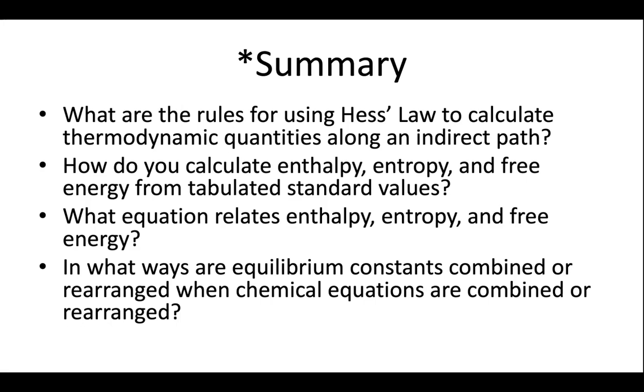When we have these three things, they're related by the equation delta G equals delta H minus T delta S. And when we do these same kinds of transformations with equilibrium constants, the rules are a little bit different. So if I reverse the reaction, I'm going to take the inverse of the K. If I multiply by a number, I'm going to raise the K to that number. And if I add my reactions together, I'm going to multiply the K's.